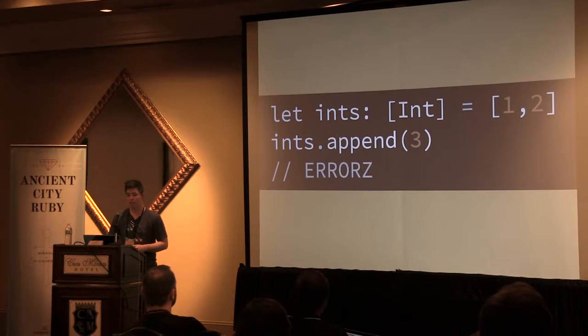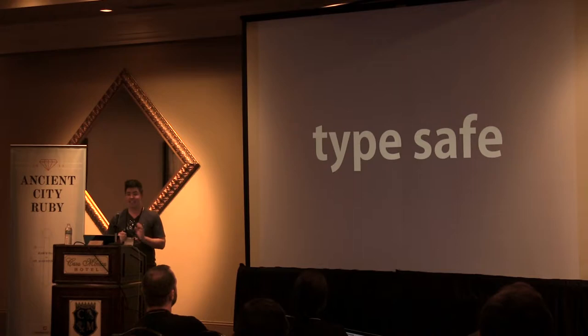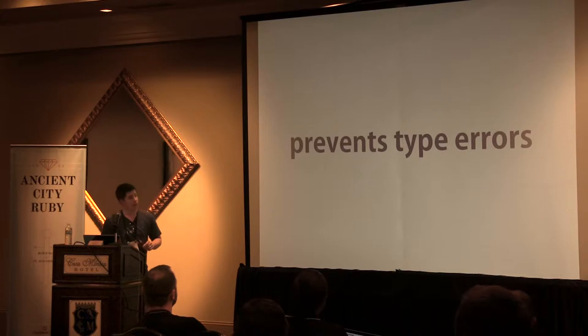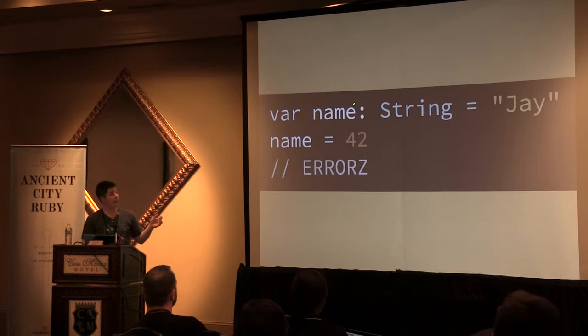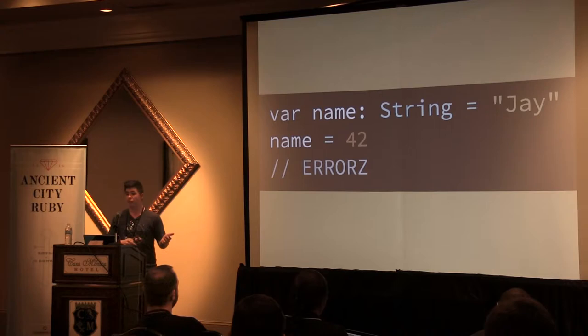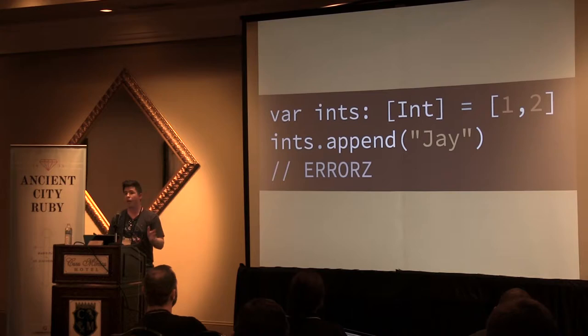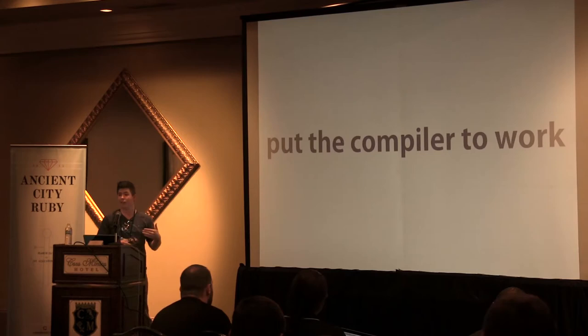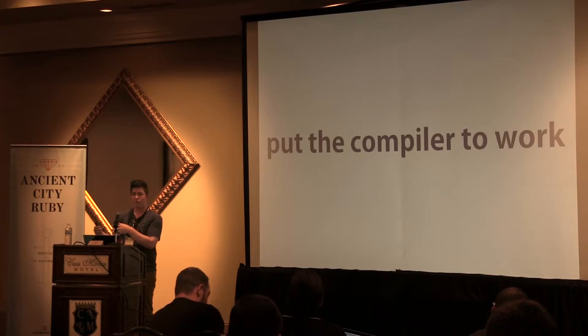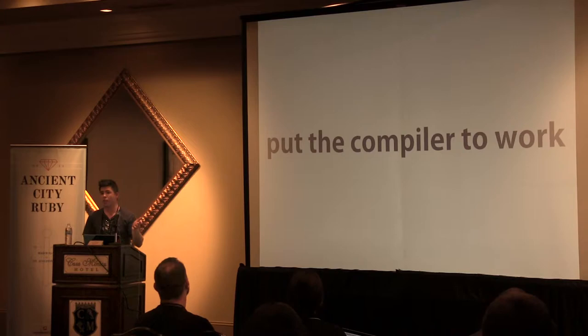Swift is a type safe language — it's actively working to prevent type errors. If you have a variable called name of type string and try to assign it a non-string value like 42, that's an error because 42 is an integer. Similarly, if you have an array of integers and try to append a string, that's an error. But Swift also supports type inference, so you can avoid explicit type declarations and write more concise code.